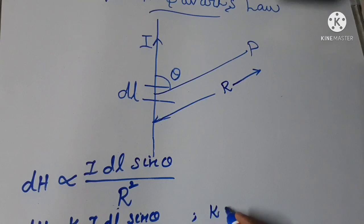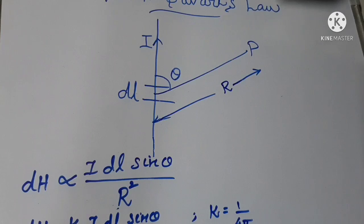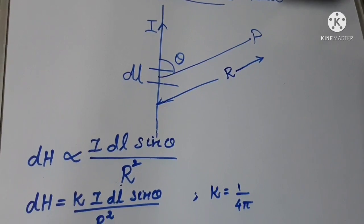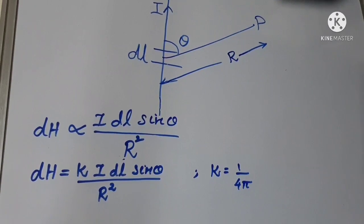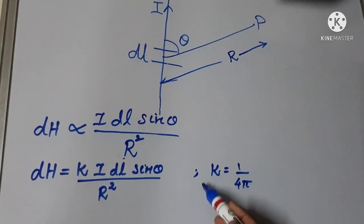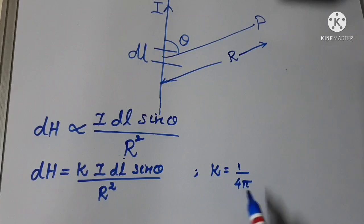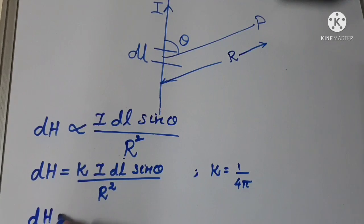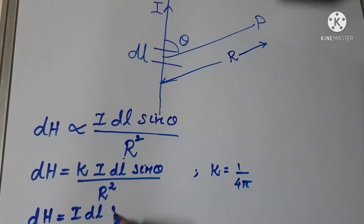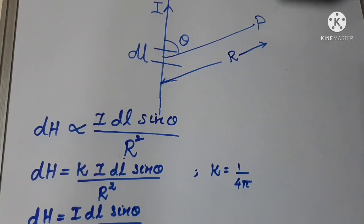Here the value of K is equal to 1 divided by 4π. By replacing K with 1 divided by 4π, the equation becomes dH is equal to IDL sin(theta) divided by 4π R squared.